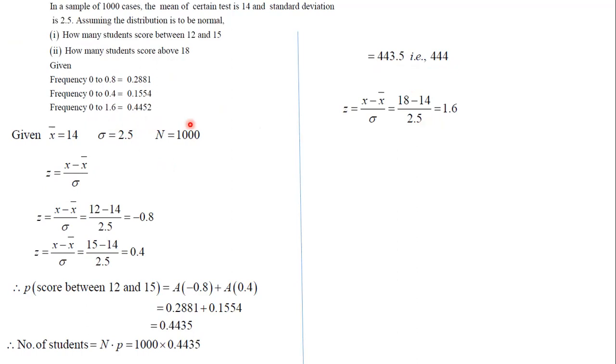So probability of greater than 1.6, that will be 0.5 minus 0.4452, which equals 0.0548. We can multiply that by 1000, so that will give you 55 number of students.